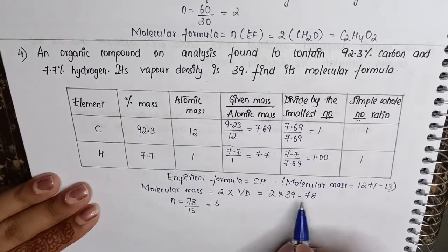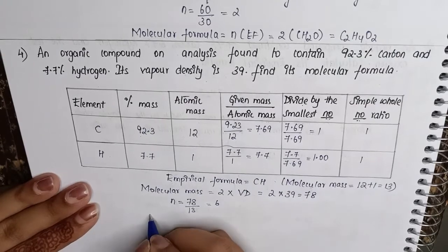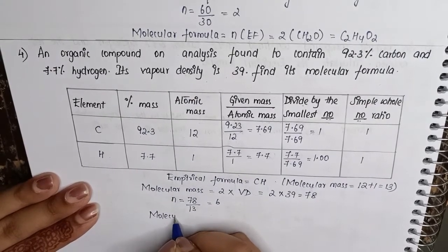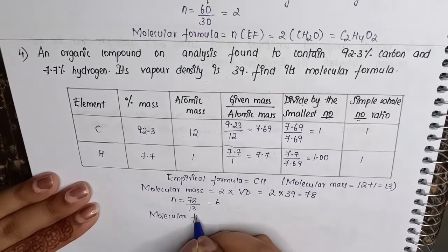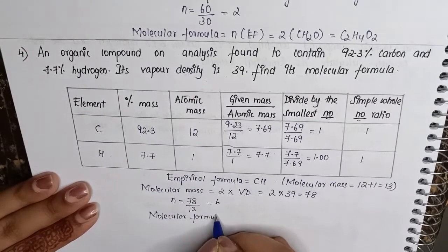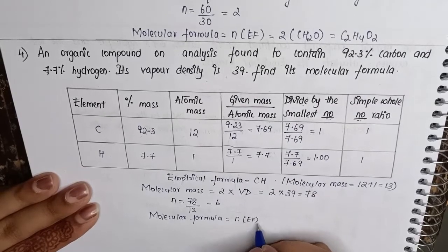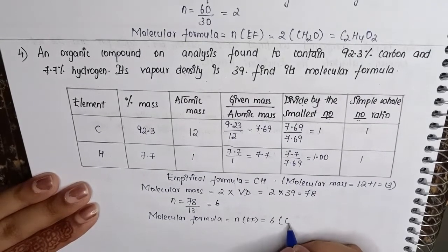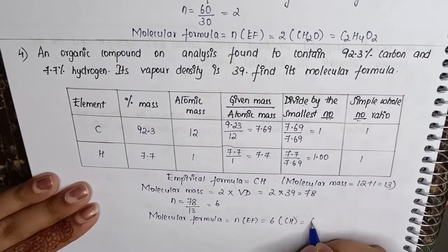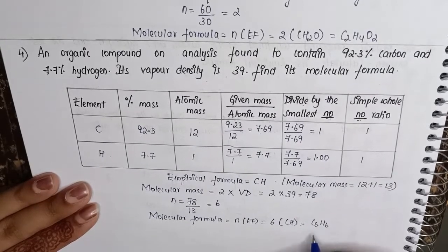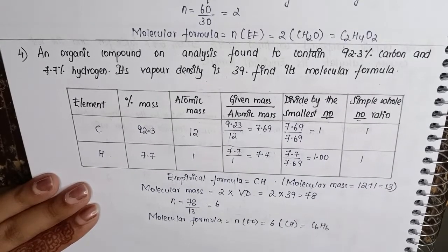So now when we have the n value as 6, we can multiply it with the empirical formula to find out the molecular formula. So molecular formula is equal to n into empirical formula, which is 6 into CH. Therefore our molecular formula is equal to C6H6.